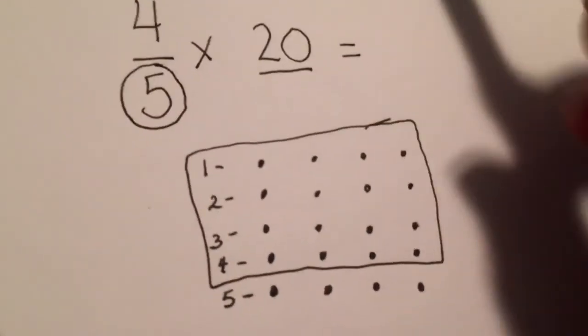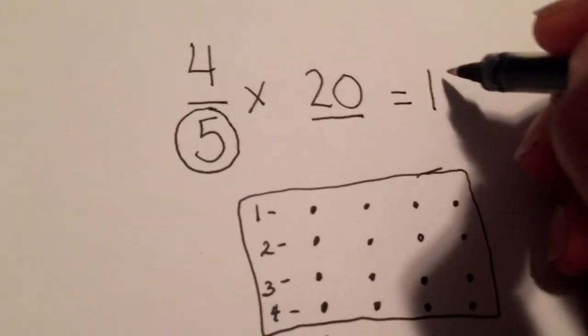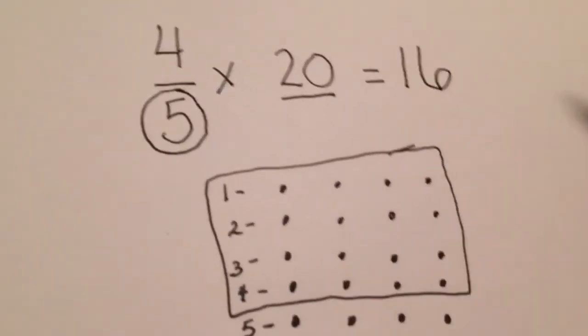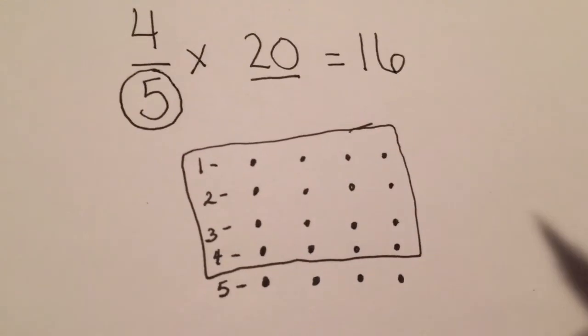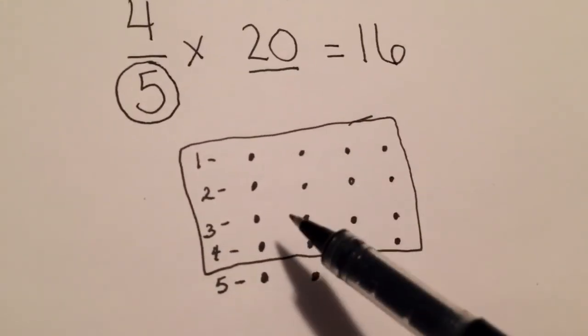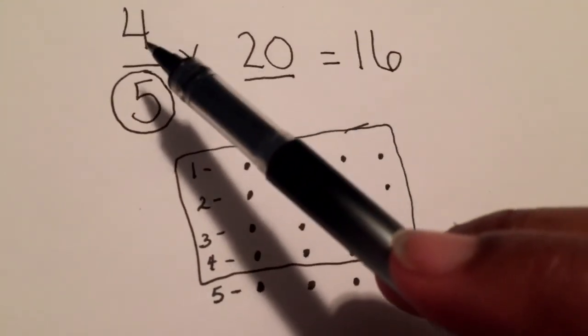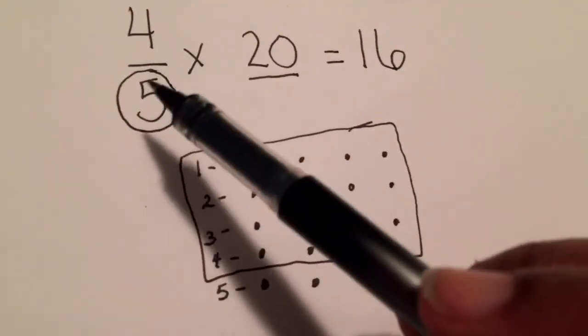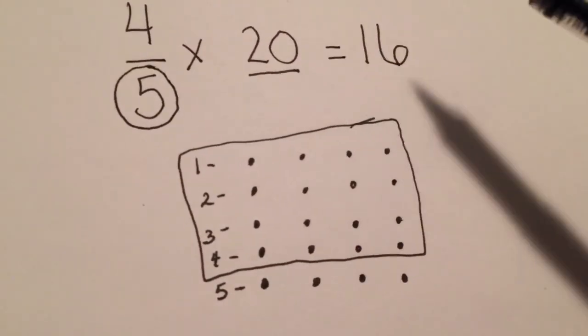Four out of the five groups of twenty is sixteen. This is how I use an array to find out how much four-fifths times twenty is.